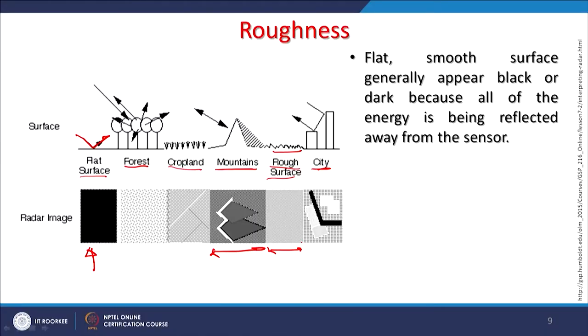If a surface is rough with small undulations, it will not produce pure specular reflection but a mixed diffuse-specular result, giving mid-range gray recordings. Corner reflectors produce very bright signatures due to the bouncing back of microwave energy. Surface roughness plays a very important role in radar images.